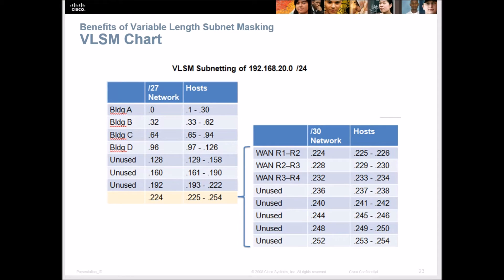Here's a chart showing how to break things out. We have buildings A, B, C, and D. Our network IP address is .0, so hosts run from .1 to .30. The next subnet is .32 to .62, then .64 to .95. The broadcast for the first range is .31 since the next subnet starts at .32. Down here at .224 is our network ID and .255 is our broadcast. We can also break those up with slash 30.